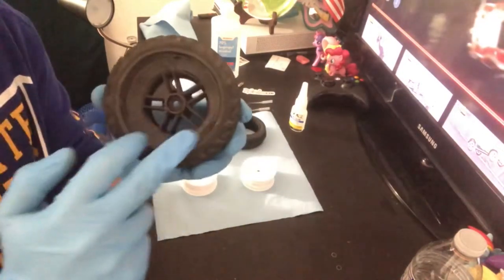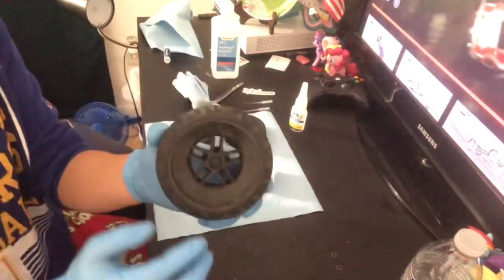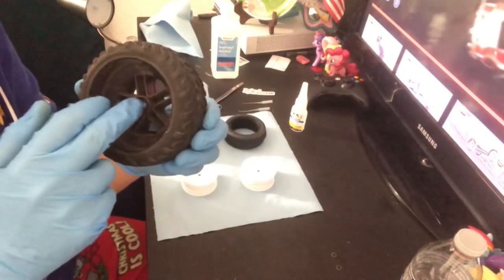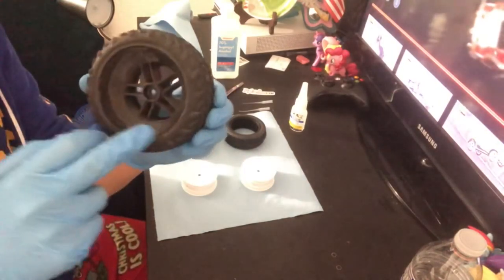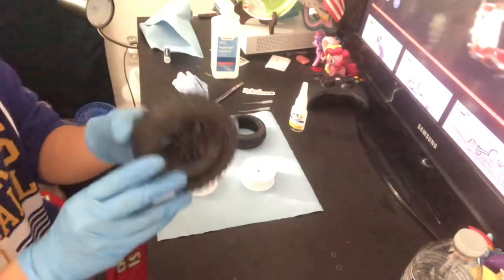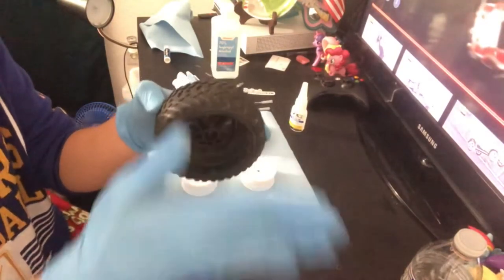You want to actually put the tire - if you're working on short course style wheels and tires, you gotta make sure that this side, the big side, is facing towards the inside of the vehicle. So if this was on a truck or car, this is going to be towards the inside and this one's facing out.